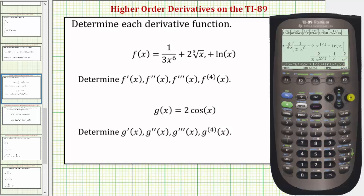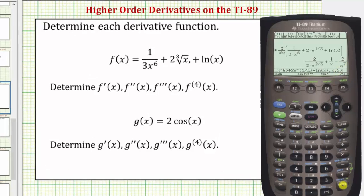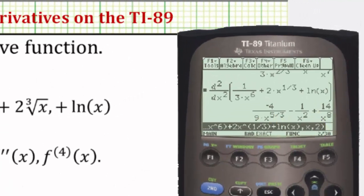Let's press the right arrow. Notice how the previous entry is still here, and now we'll press the left arrow, and then if we enter a comma two — notice how the close parenthesis is still there — this two will give us the second derivative of the original function. Note that changing the two to a one would give the first derivative, but the default without this extra value is the first derivative. So if we press Enter, F double prime is equal to this function here.